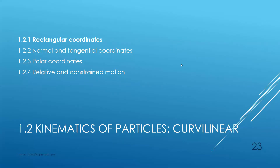Now we move to the second subtopic which is kinematics of a particle, but now we look into curvilinear motion. Previously we looked into rectilinear motion — motion in a straight line. Now we look into curvilinear motion, which involves more than one axis.